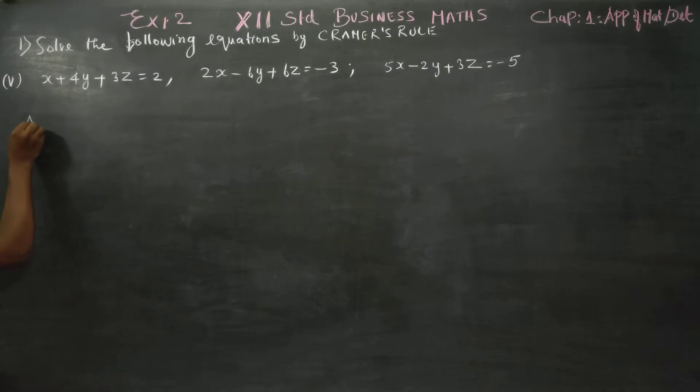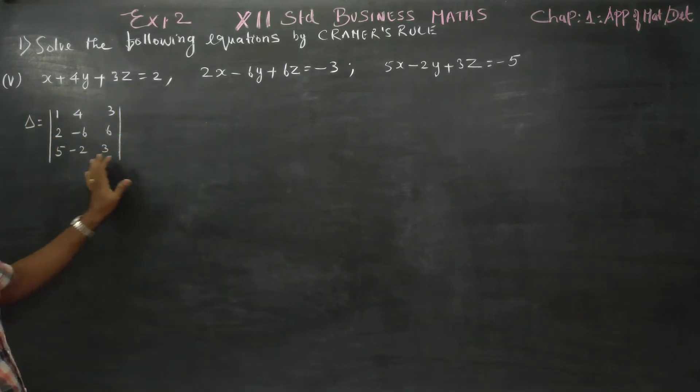Cramer's rule, first you have to start with the delta. 1, 4, 3, 2, minus 6, 6, 5, minus 2, 3. X coefficient, Y coefficient, Z coefficient all at the end.